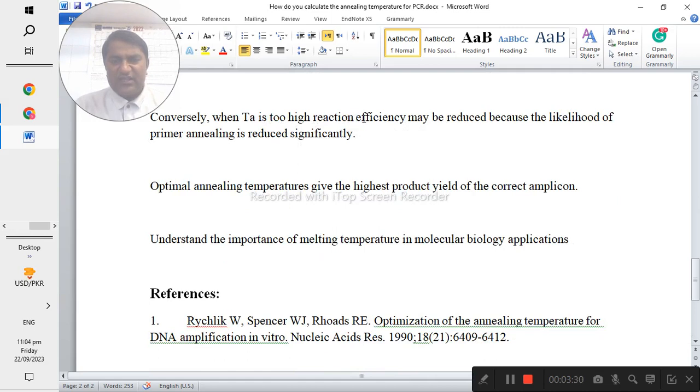Conversely, when Ta is too high, reaction efficiency may be reduced because the likelihood of primer annealing is reduced significantly. Optimal annealing temperature gives the highest product yield of the correct amplicon. Understand the importance of melting temperature in molecular biology applications.